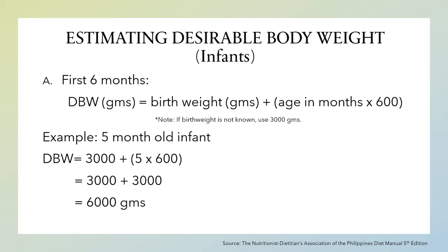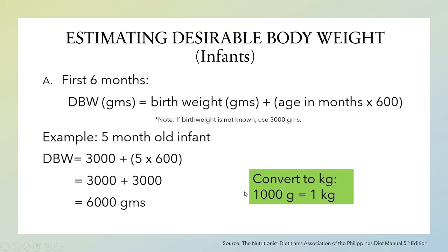Now to convert the weight into kilograms, we will use the following conversion factors. Since 1000 grams equals 1 kilogram, we will divide 6000 by 1000, giving us 6 kilograms.